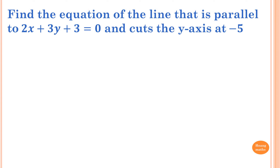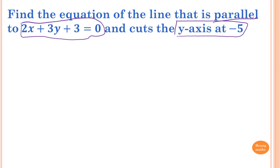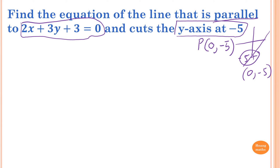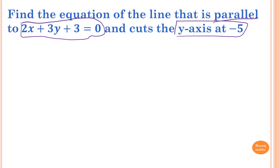Next question: find the equation of the line that is parallel to 2x + 3y + 3 = 0 and cuts the y-axis at negative 5. Parallel means the same gradient as this line. Cutting the y-axis at -5 means the line passes through the point (0, -5). So the point is (0, -5).